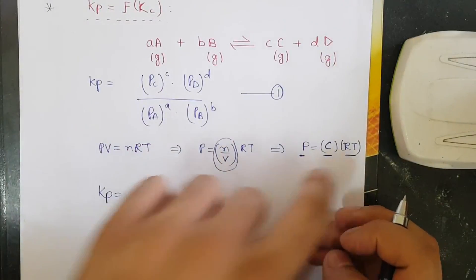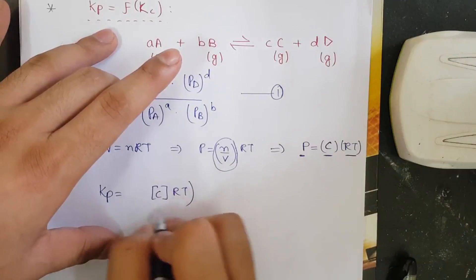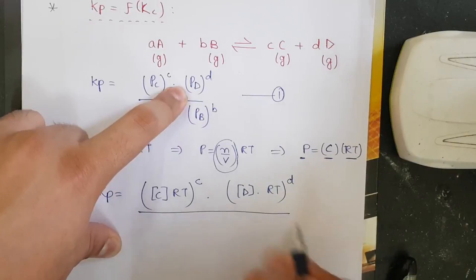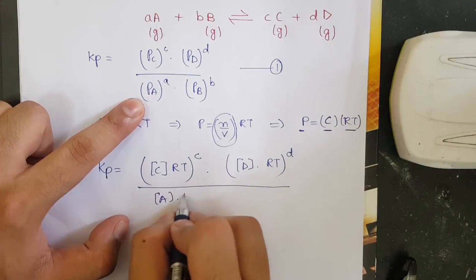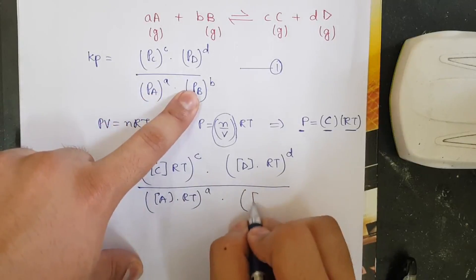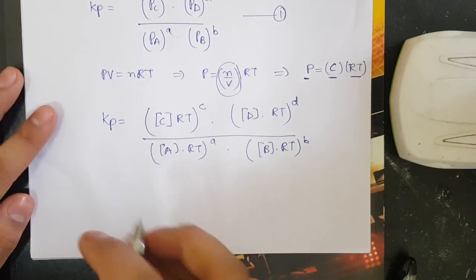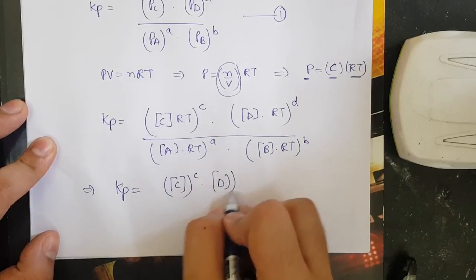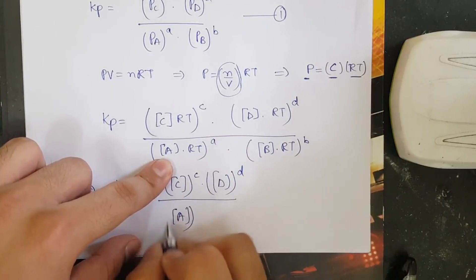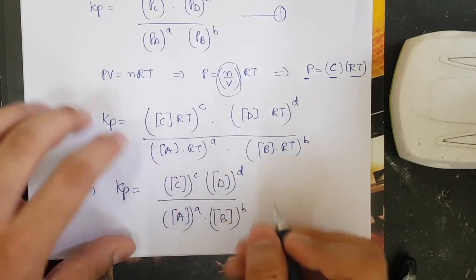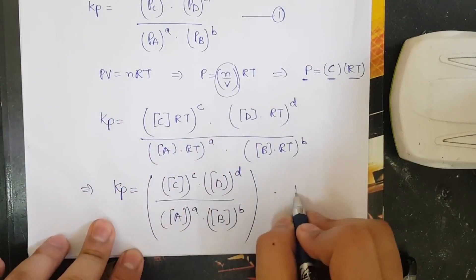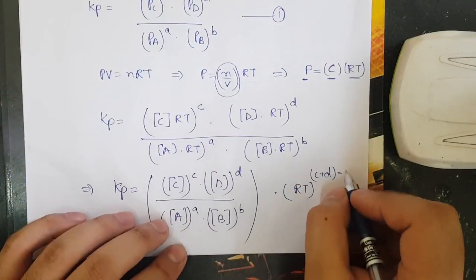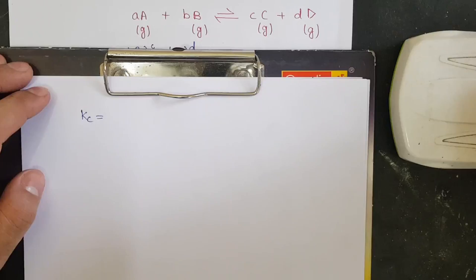Substituting into the Kp expression: Pc becomes [C]·RT, Pd becomes [D]·RT, and so on. So Kp equals ([C]·RT)^c · ([D]·RT)^d divided by ([A]·RT)^a · ([B]·RT)^b. Separating the concentration terms gives [C]^c·[D]^d / ([A]^a·[B]^b), multiplied by (RT)^(c+d) in the numerator and (RT)^(a+b) from the denominator, giving (RT)^(c+d−a−b).